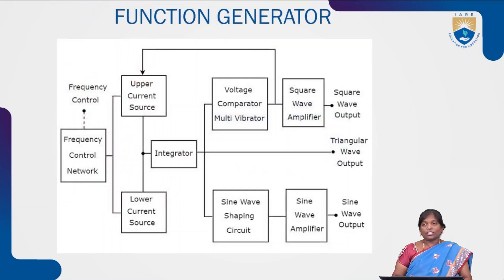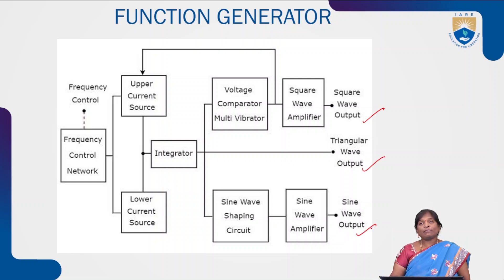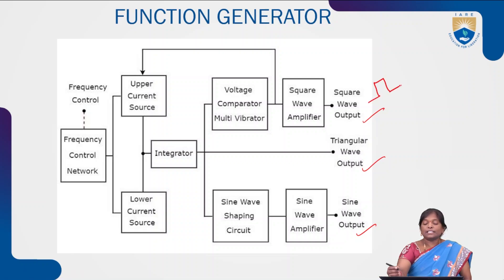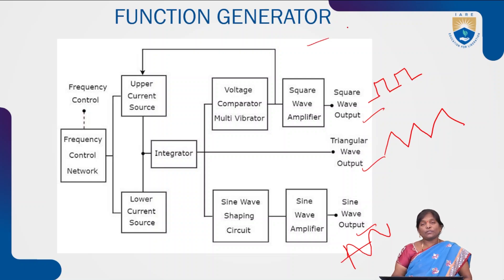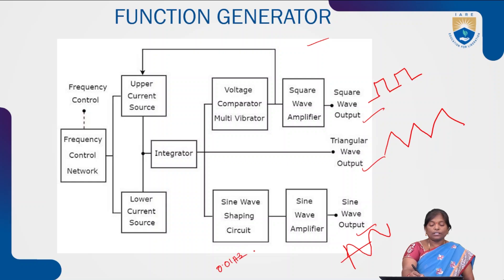The next type is the function generator. This function generator helps to generate three different types of signals: square wave, triangular wave, and sine wave. With the help of a single function generator we can generate all three types. The main application of this function generator is in the frequency range of 0.01 Hz to 100 kHz.